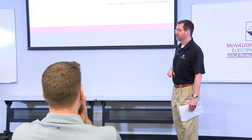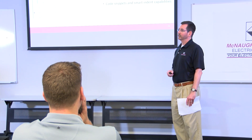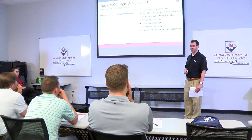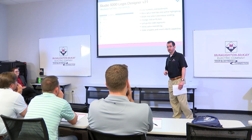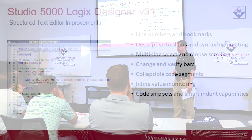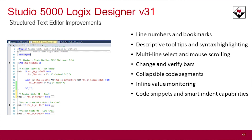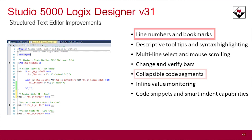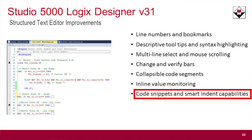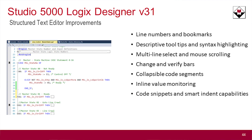For those of you that use the structured text editor and function block, that's been a criticism programmers have had for a long time — that Rockwell's structured text editor is rather archaic. They've finally moved in the right direction. There are a lot of new features: adding line numbers, collapsible code, and autofill code snippets. As you start working in an instruction, it autofills and guides you through filling out the parameters and arguments. Indenting and various things like that make it more user-friendly and easier to read.